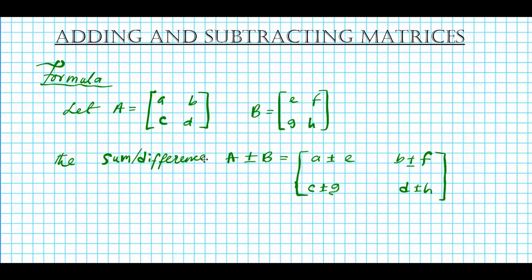You might wonder what the rule is for adding or subtracting matrices. All you do is add or subtract corresponding elements. The element in row one, column one — you add it to the element in row one, column one of the second matrix. The same goes for row one, column two, and so on, depending on whether you're adding or subtracting.